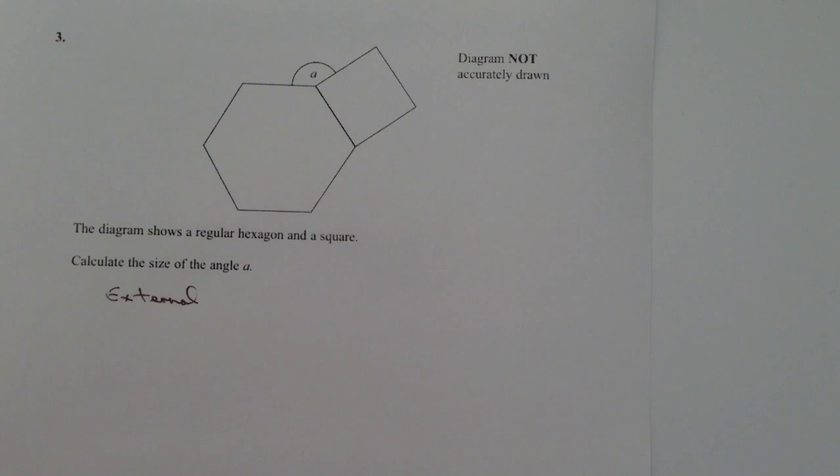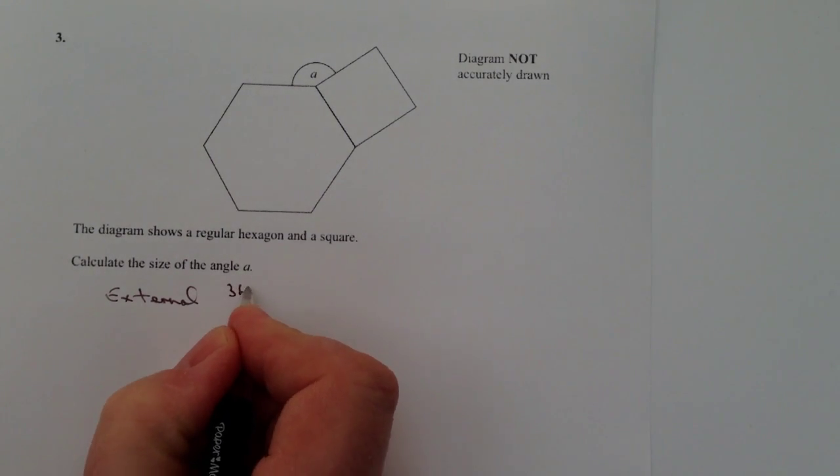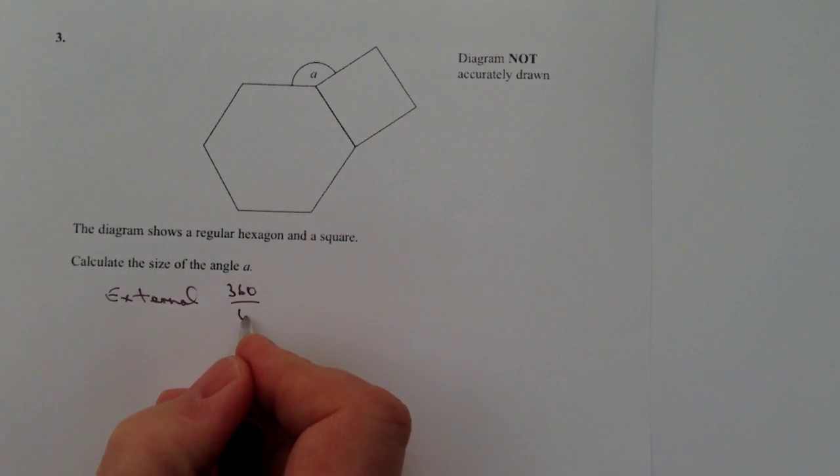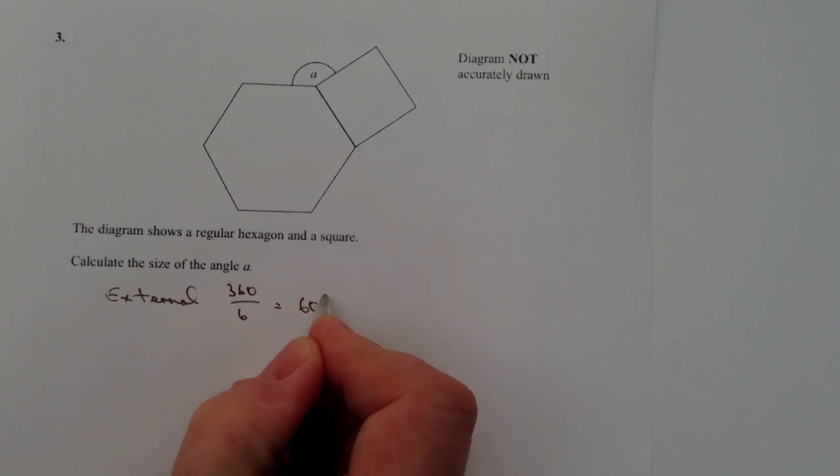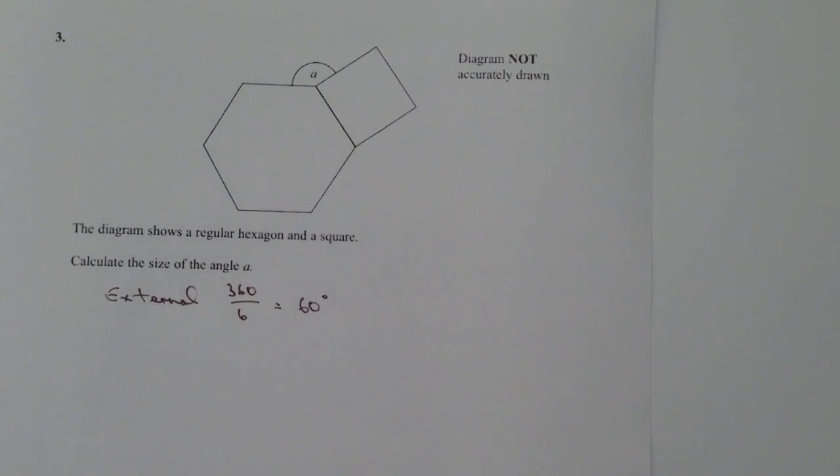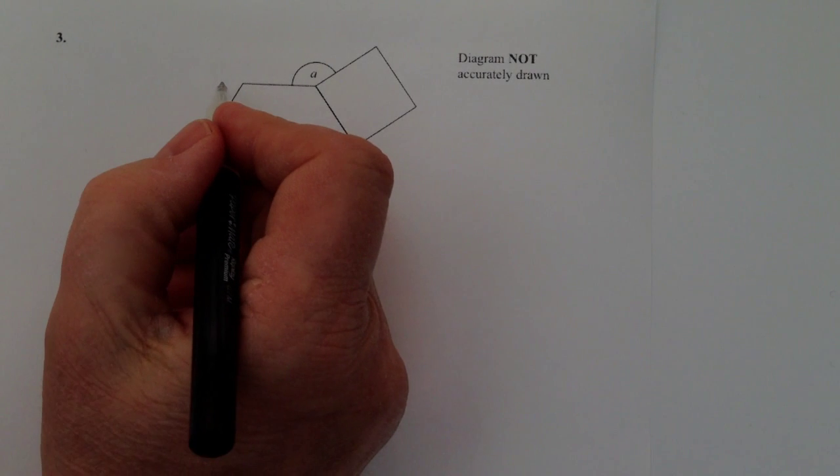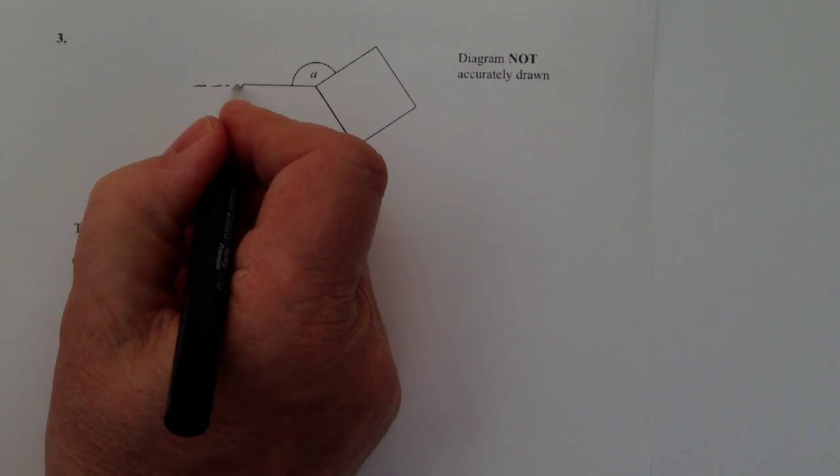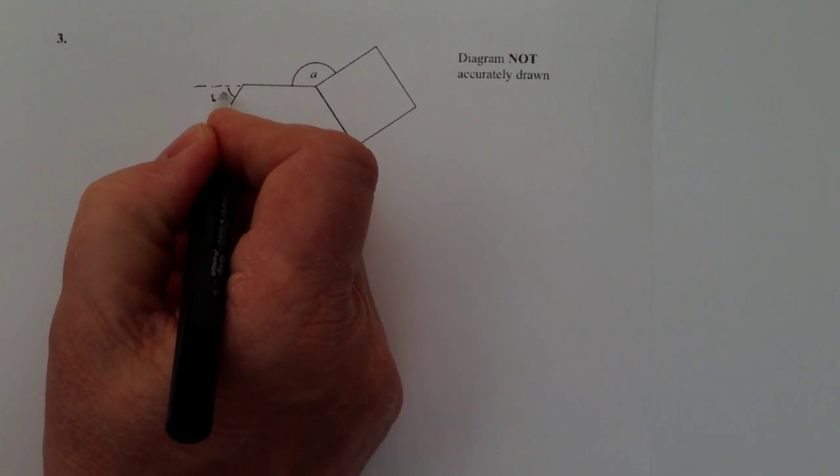So therefore it's telling me that 60 degrees is this value here which is along here and that's 60 degrees.